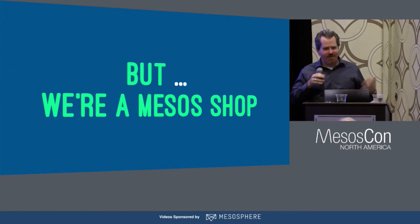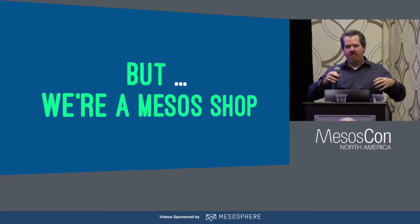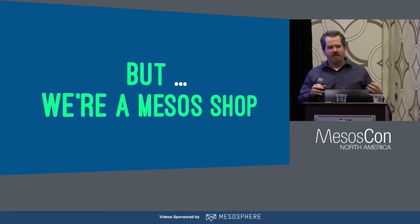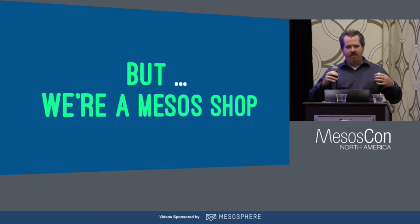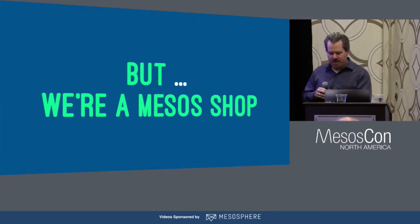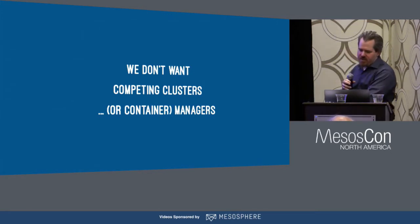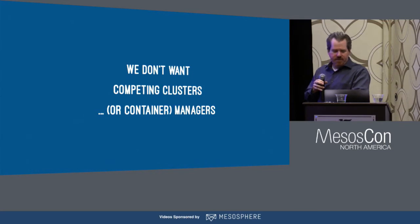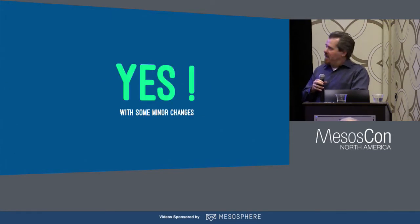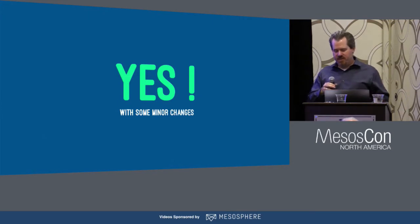We're a Mesos shop and we really don't want competing cluster resource managers. In OpenWhisk, the invoker is effectively a resource manager that considers itself the owner of all Docker containers on any particular host — very familiar to Mesos operators, since a Mesos agent on the host typically operates the same way. We don't want competing clusters or competing container managers. We want to use Mesos to manage the cluster, and we just have to make some minor changes in OpenWhisk to do this.